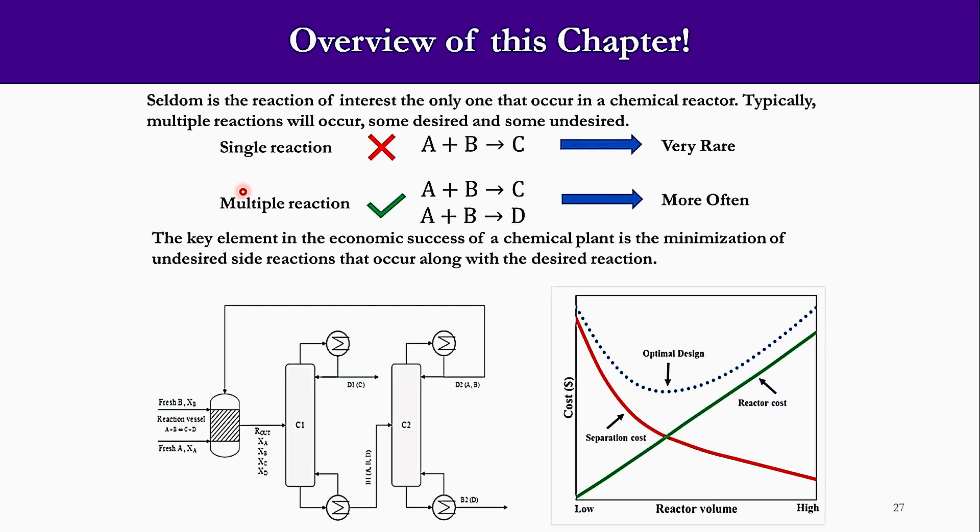So far we have studied single reactions, like we can say A plus B goes to C, or A goes to B, or A plus B goes to C plus D, and so on. But these are single reactions, and once we talk about industrial aspects or real-time aspects, the single reactions are very rare in the system.